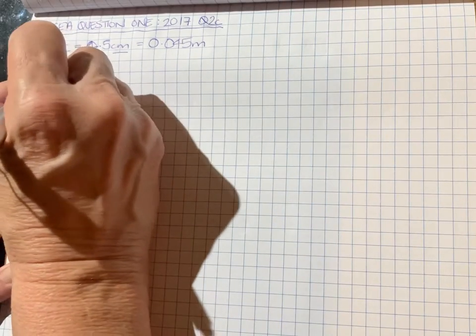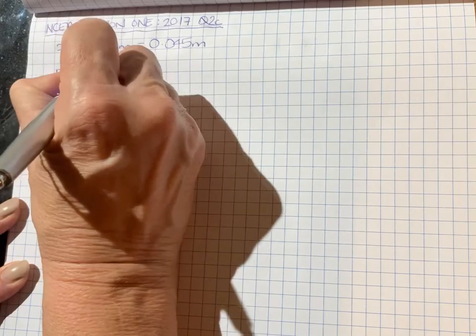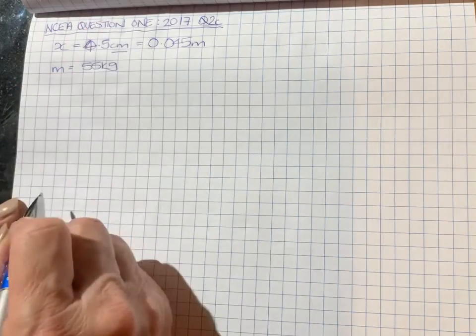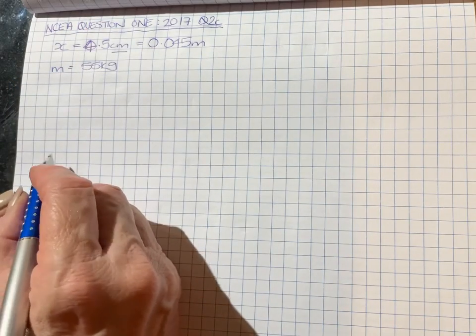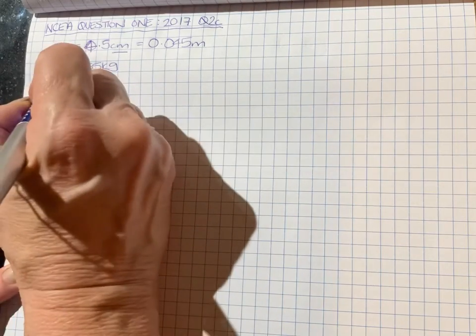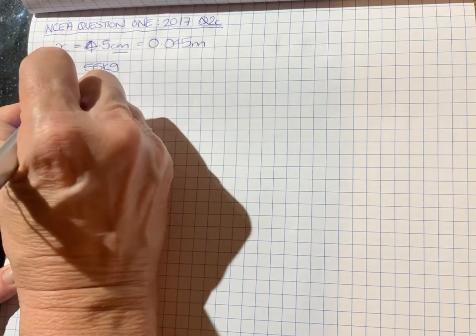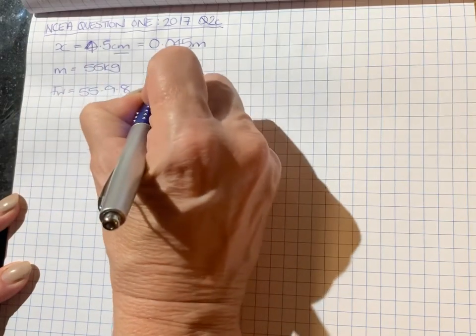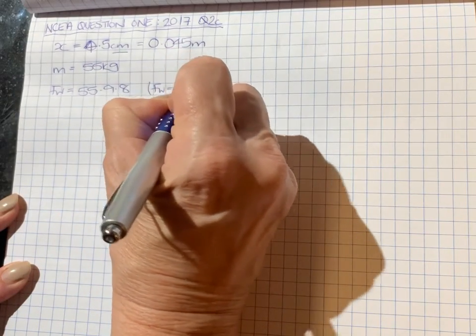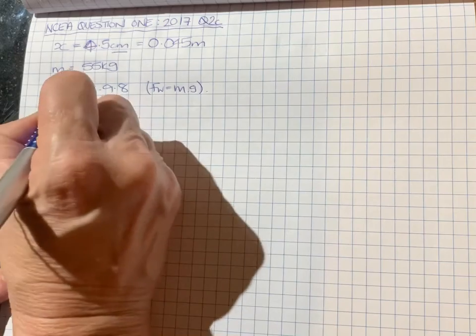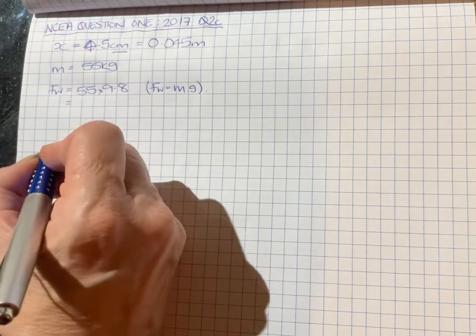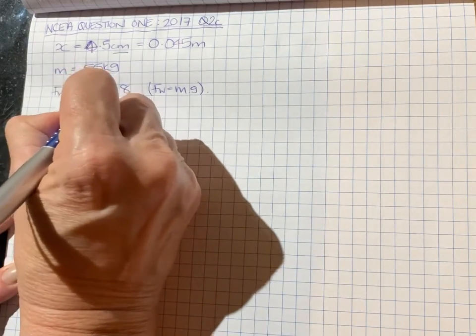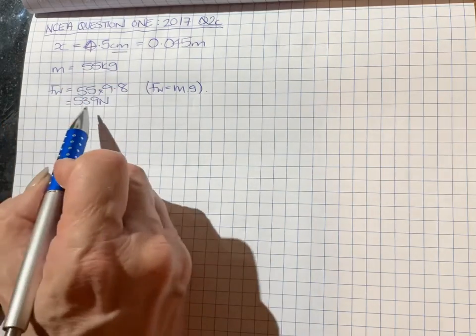The other thing we're given is Sarah's mass, which is 55kg. Whenever you're given a mass, it's very easy to change that into a weight force by multiplying by 9.8, and that's weight force equals mass times gravity. When we do that, we get 539 newtons.